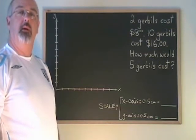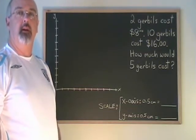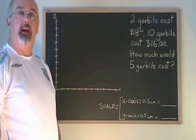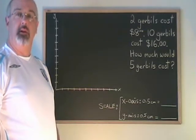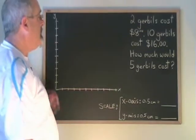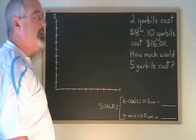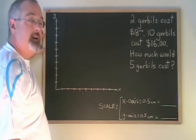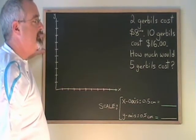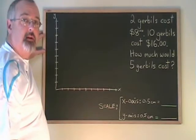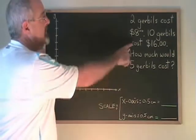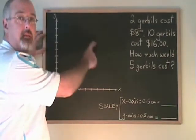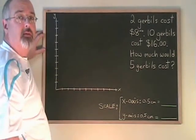In this problem, we are going to use the information given to graph a straight line, and then use the graph to answer questions. In there is the information that I need to put two points on my graph, and then I'll draw a line through them.